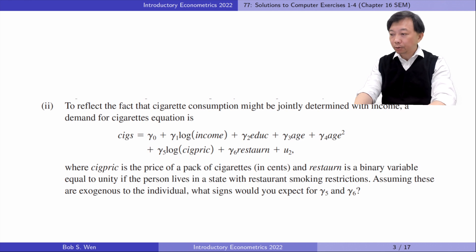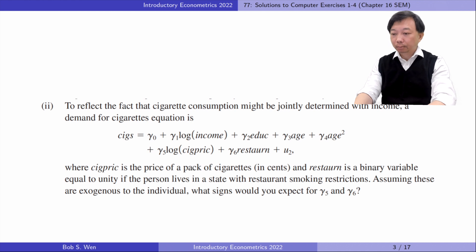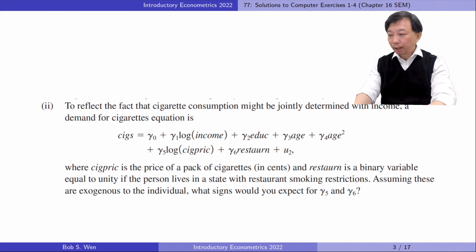Here, cigarette price is the price of a pack of cigarettes, and restaurant is a binary variable equal to unity if the person lives in a state with restaurant smoking restrictions. Assuming these are exogenous to the individual, what signs would you expect for Gamma-5 and Gamma-6? According to the Law of Demand, holding other factors constant, cigarette demand decreases as its price increases, so Gamma-5 should be negative. The restaurant smoking restriction will reduce the demand for cigarettes, so Gamma-6 should be negative too.